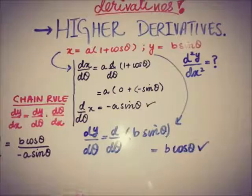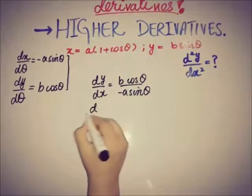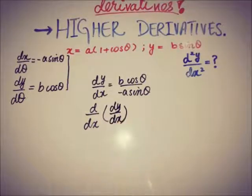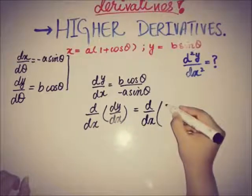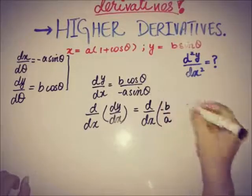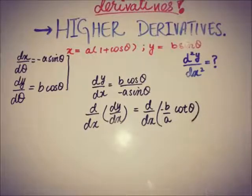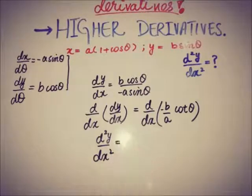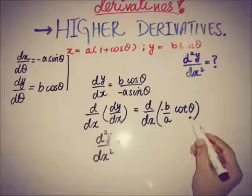For the second derivative, we take d/dx of (dy/dx). We can write dy/dx as −(b/a) · (cosθ/sinθ), which equals −(b/a) cotθ. Now d²y/dx² = d/dx of −(b/a) cotθ. The function is in terms of theta, and theta is not a constant.